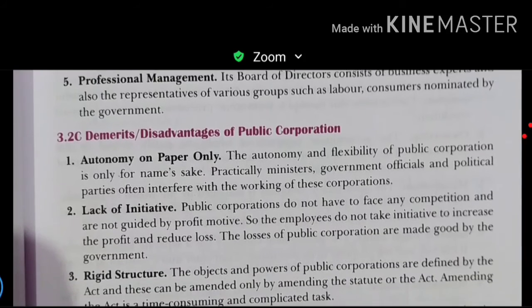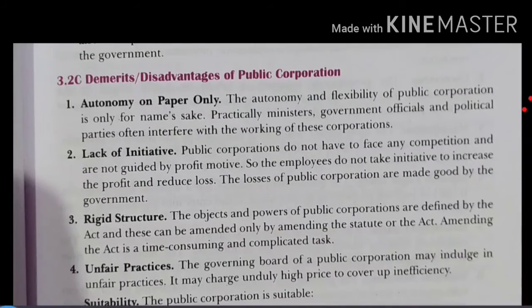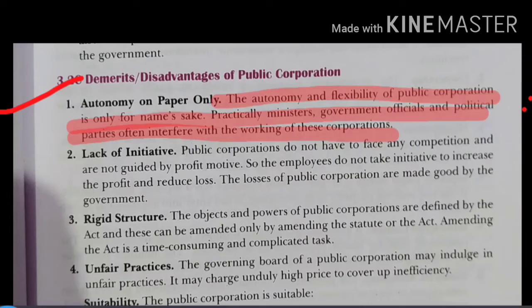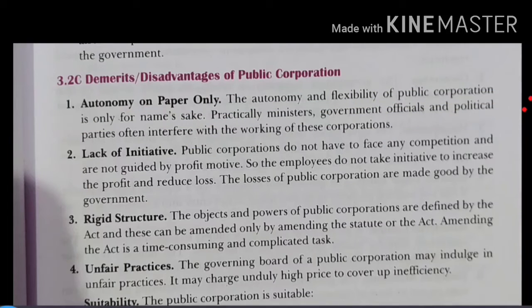We have completed the merits. Now we are going to discuss the demerits of public corporations. The first demerit is autonomy only on paper — the autonomy of the public corporation is only in name; practically, ministers, government officials, and political parties interfere. So on paper it remains autonomous, but in practice the government intervenes.